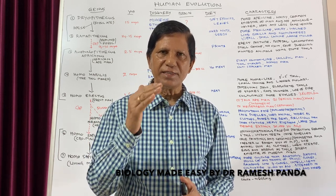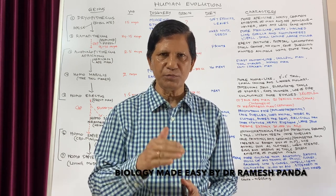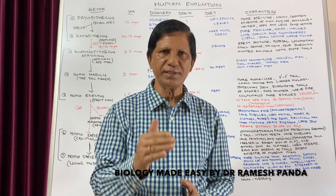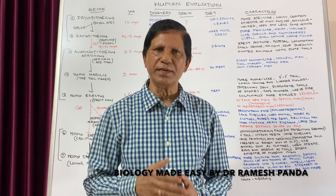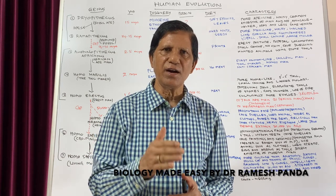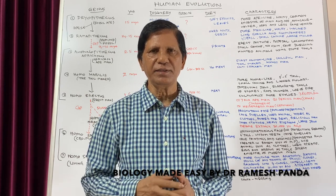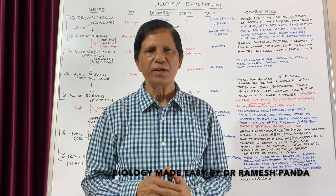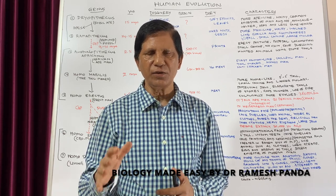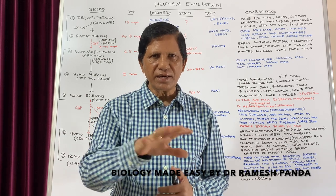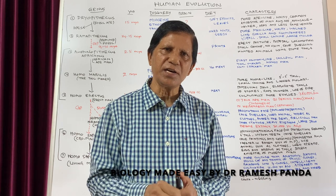T.A. Huxley has written about this in his book, Man's Place in Nature. Charles Darwin also wrote about it in his book, The Descent of Man. The fossil records show that Central Asia, China, Indonesia, and India are the areas where human beings originated and evolved.